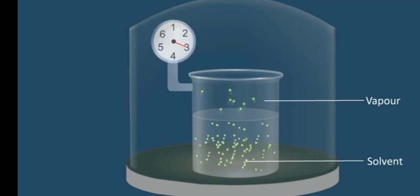The vapors above the liquid solvent create a pressure known as vapor pressure of the solvent. It can be recorded by using a pressure gauge as shown in the animation.